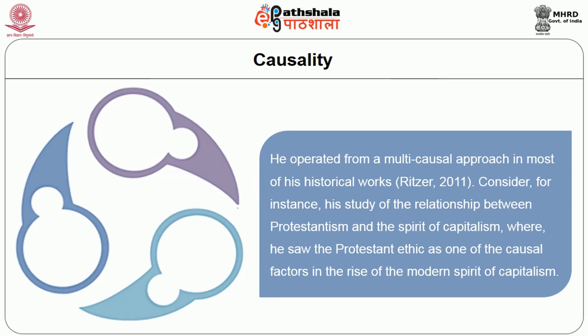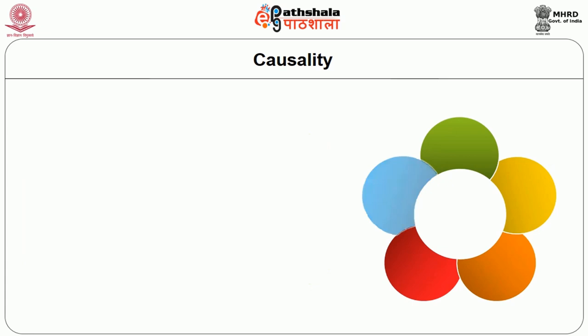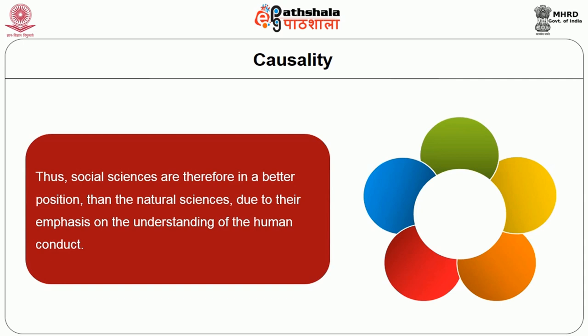Weber operated from a multi-causal approach in most of his historical works. Consider, for instance, his study of the relationship between Protestantism and the spirit of capitalism, where he saw the Protestant ethic as one of the causal factors in the rise of the modern spirit of capitalism. The question of causality for Weber was not answered in one way; rather, he was attuned to the interrelationships among a number of social factors. His thinking on causality was greatly influenced by his belief about having a special understanding of social life, making the causal knowledge of social science different from that of natural sciences.